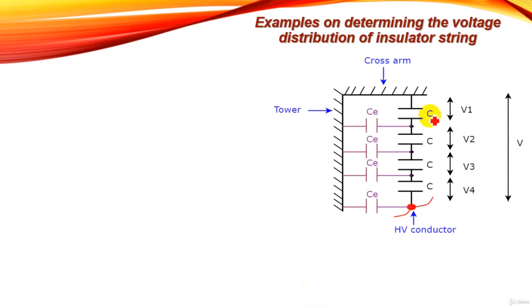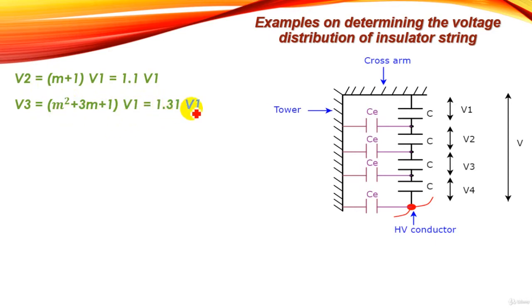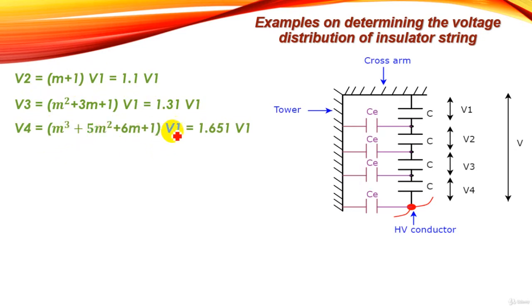Now the voltage distribution over each unit. We have: V2 equals (m + 1)·V1, so V2 equals 1.1·V1. V3 equals (m² + 3m + 1)·V1, so V3 equals 1.31·V1. And V4 equals (m³ + 5m² + 6m + 1)·V1, so V4 equals 1.651·V1.